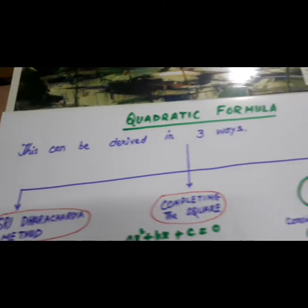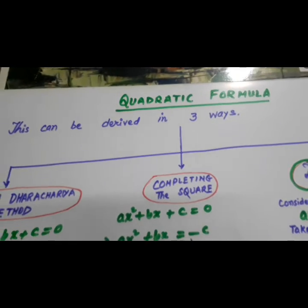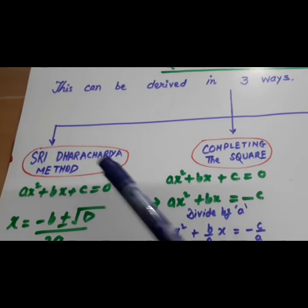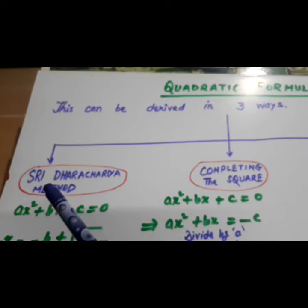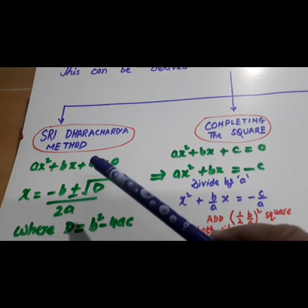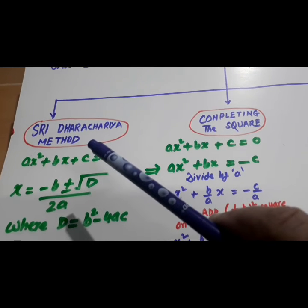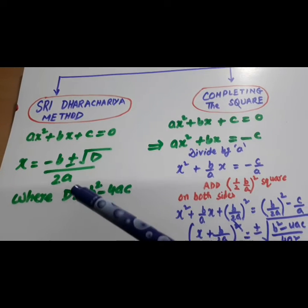Now, this is the one. Quadratic formula. This can be derived in three ways. First name is Shridharacharya method. He had found this quadratic formula. He was an Hindu. And look here. Hindus have found this formula.